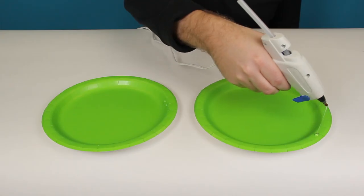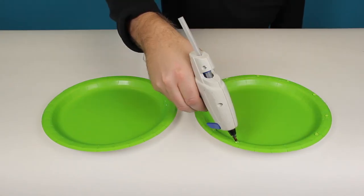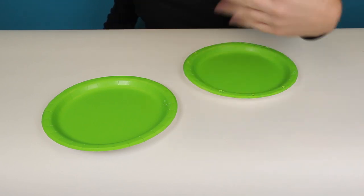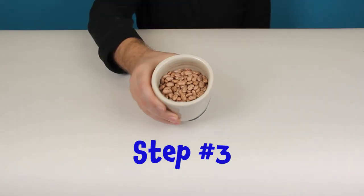Step two, glue the paper plates together, but watch out, the glue is hot. Maybe get a parent or guardian to help you. Step three, fill them with those beans.